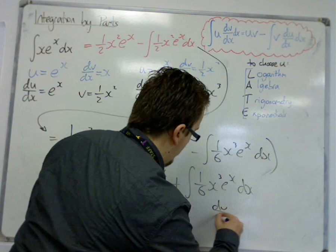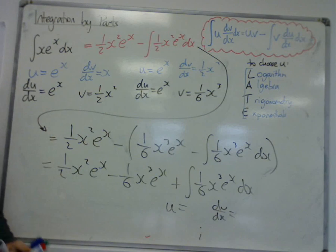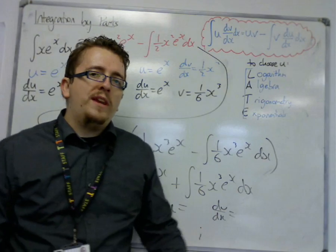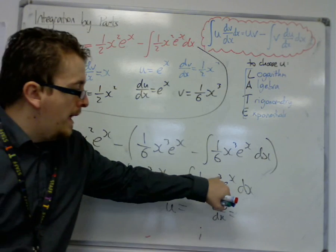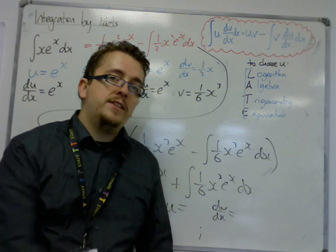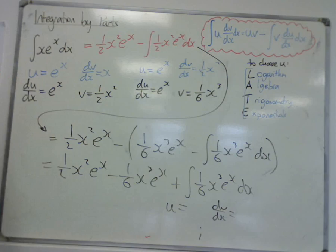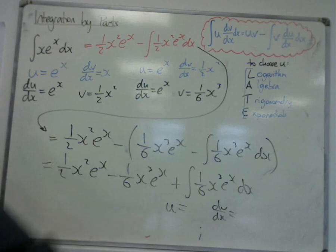u equals, dv by dx equals etc. And so on and so forth. And the integral that you keep getting on that right-hand side will keep increasing in power. You'll get an x to the 4, an x to the 5, an x to the 6, each time having to use integration by parts. And you're going to get this infinite series.